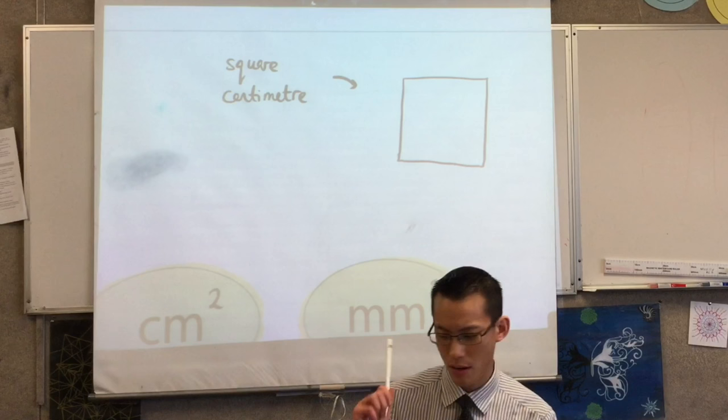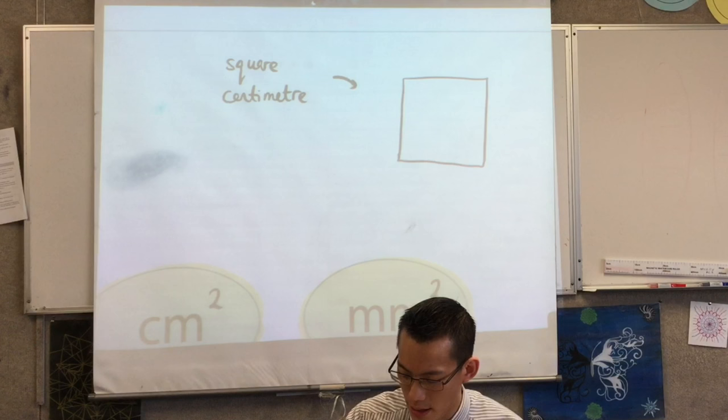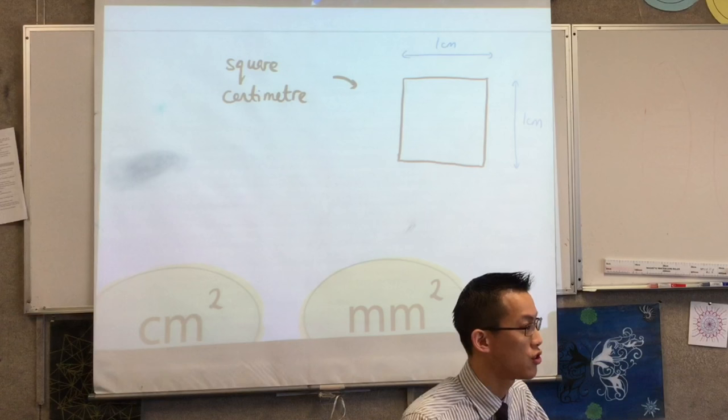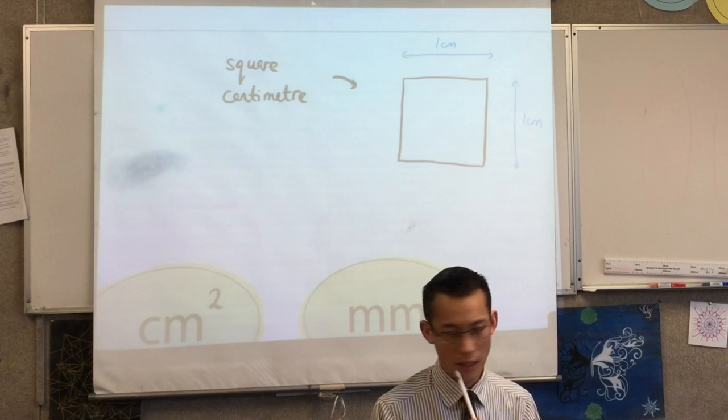Now we know there are ten millimeters in every centimeter, right? So this square centimeter is one centimeter across the top like that, and it's also one centimeter along the side like that. That's the way you actually drew this shape.